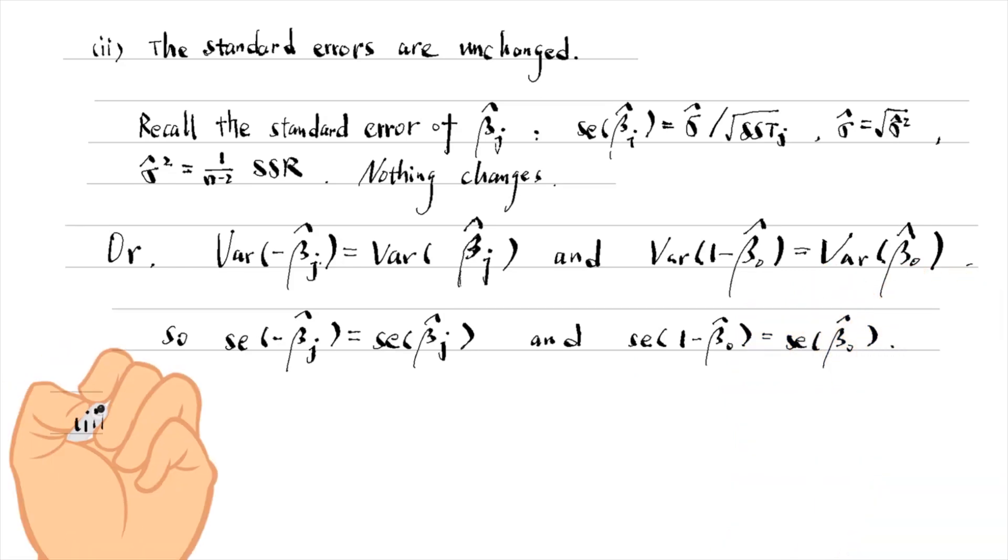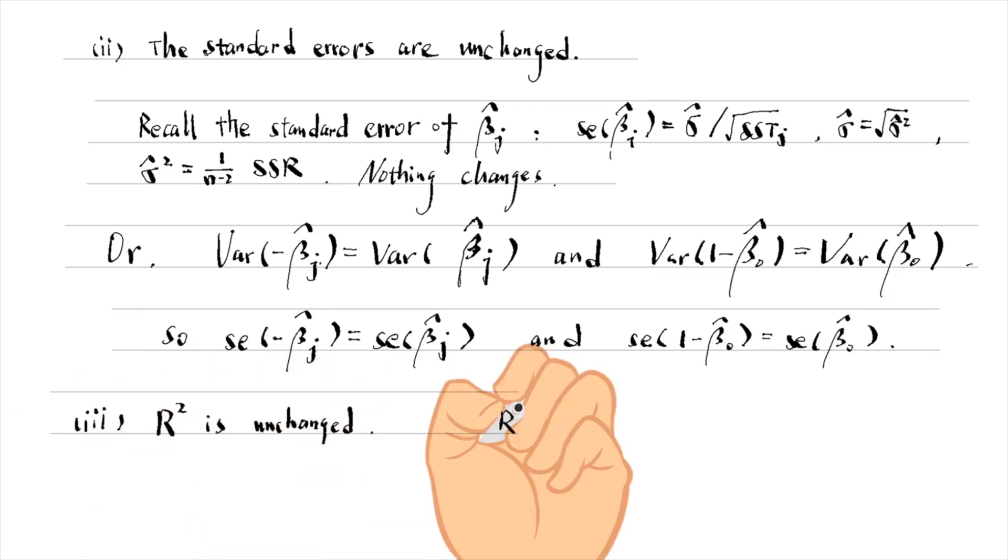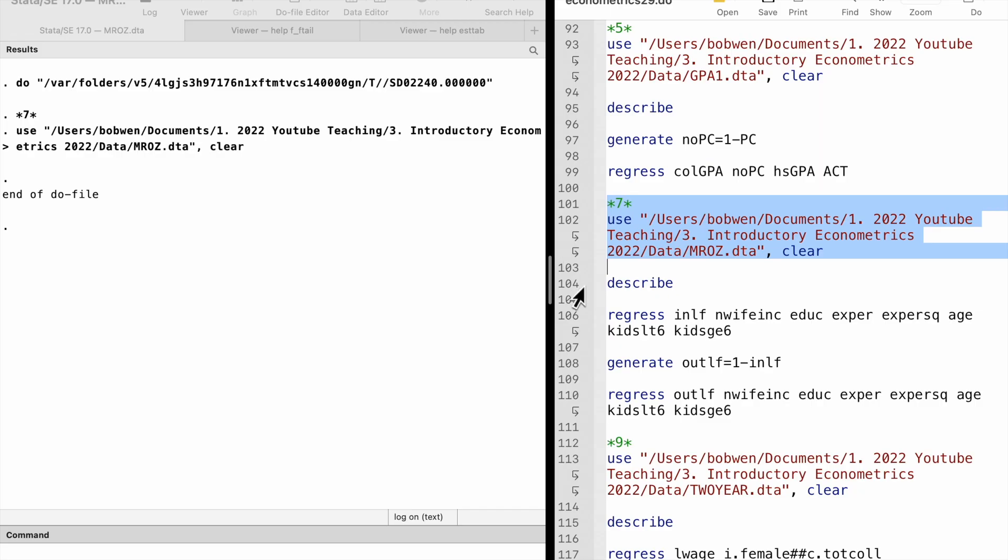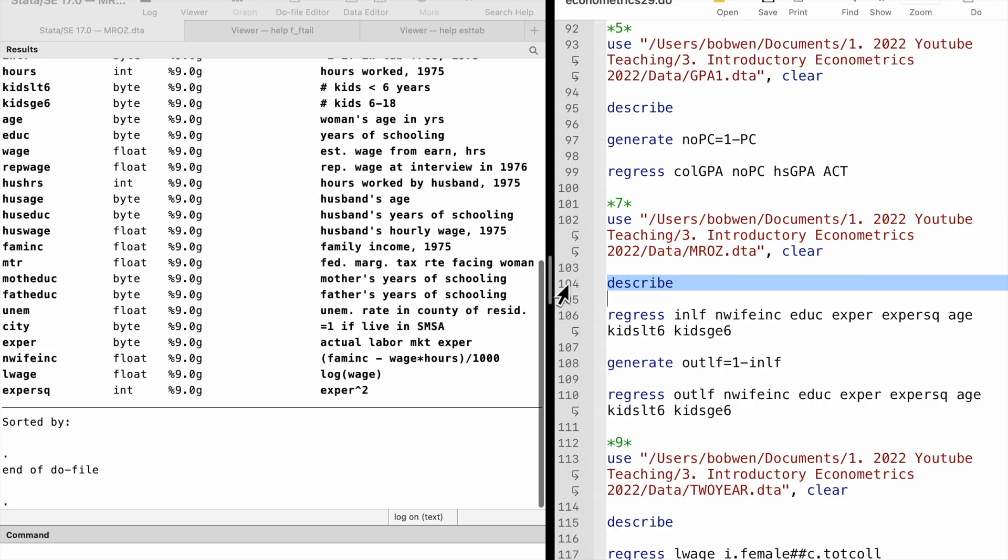In part 3, the r squared is unchanged because the sum of squared residuals, SSR, and the total sum of residuals, SST, do not change. We can verify the above conclusions by comparing the estimated equations in Stata.